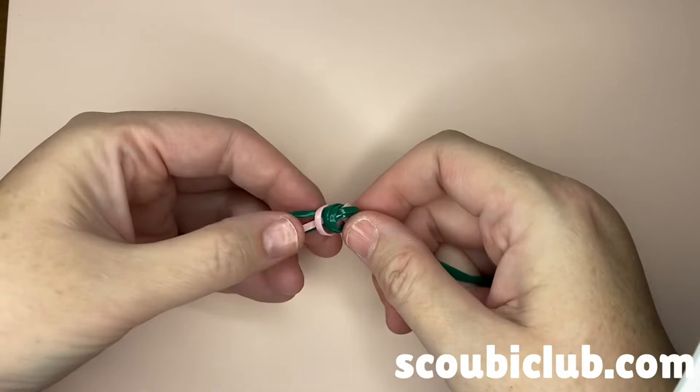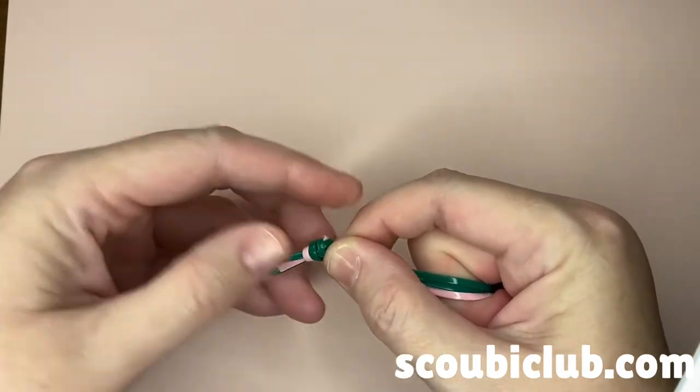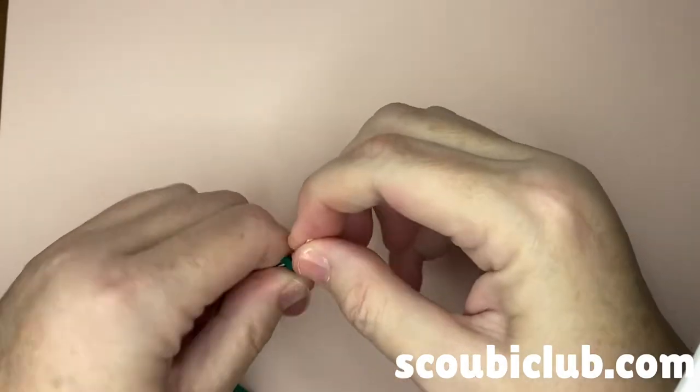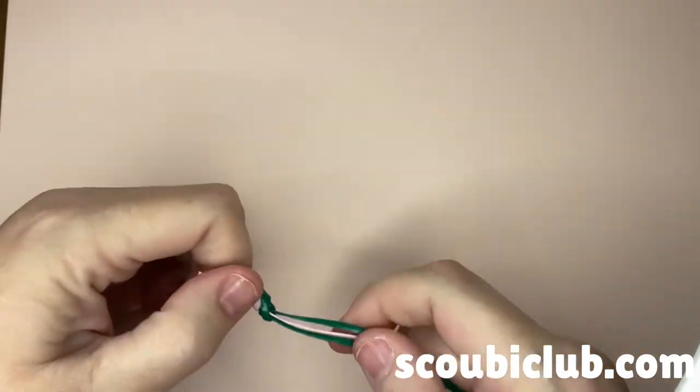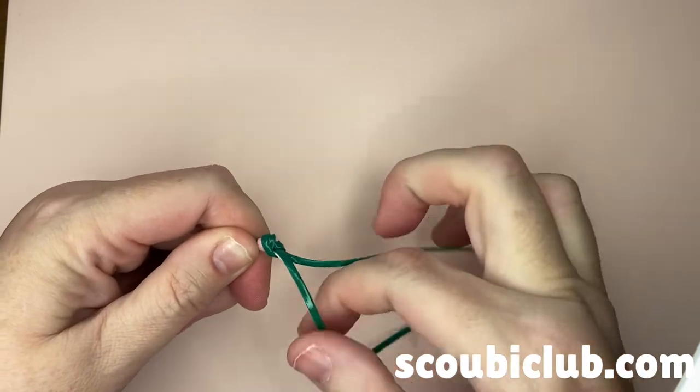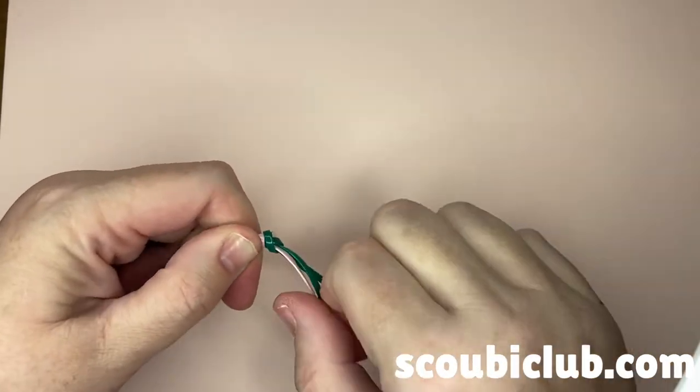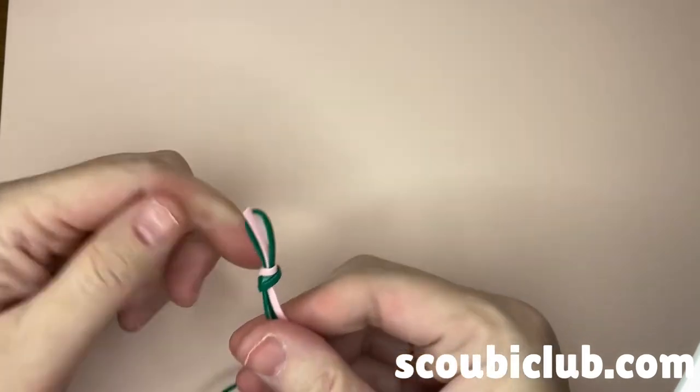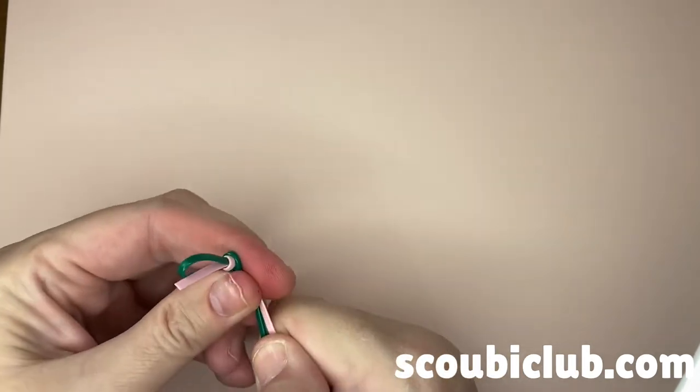So once you've made your pretzel, you're going to tighten it up. If your loop is just too big, you want to give everything a pull and adjust your knot so the loop is about a half or three-quarters of an inch in size.